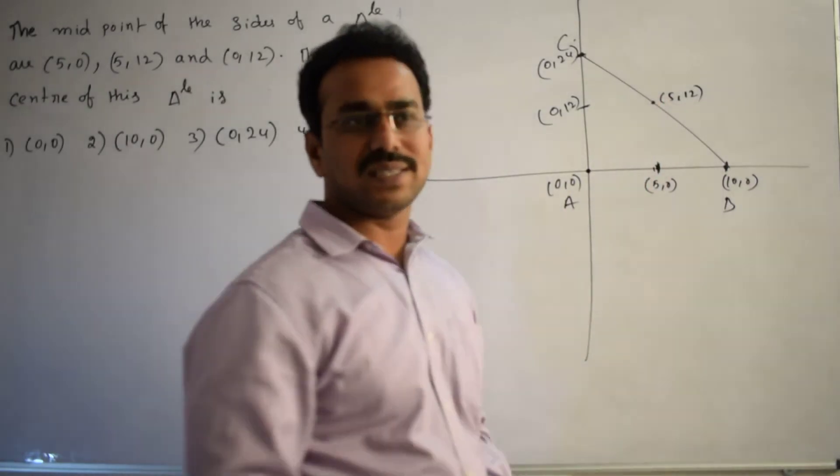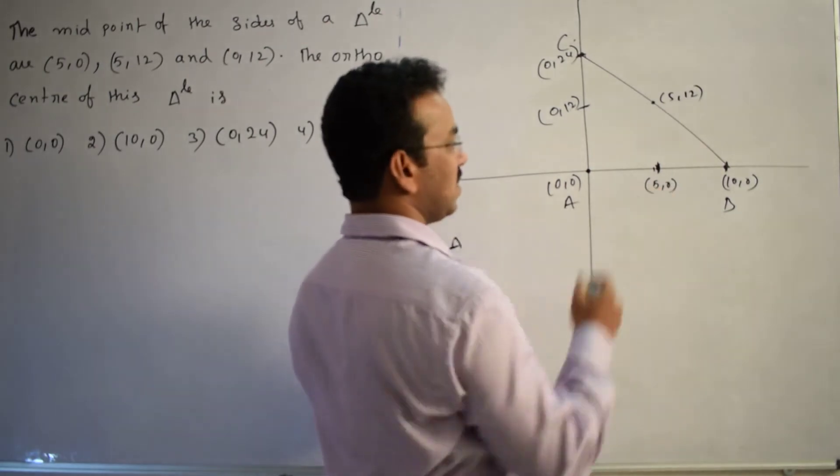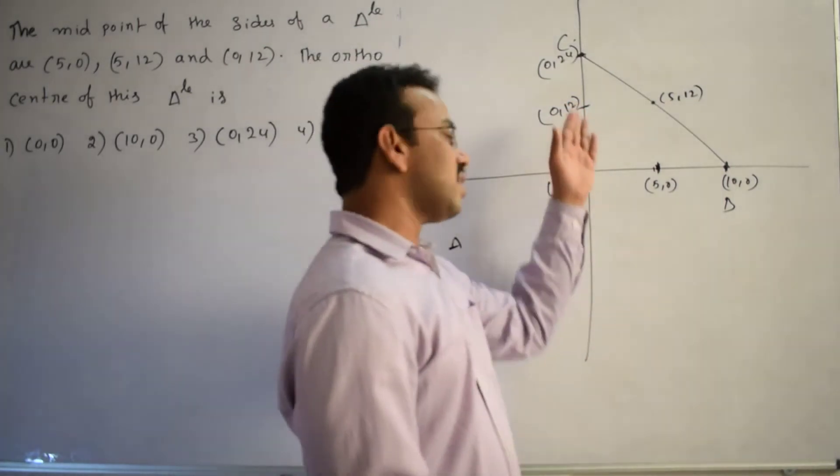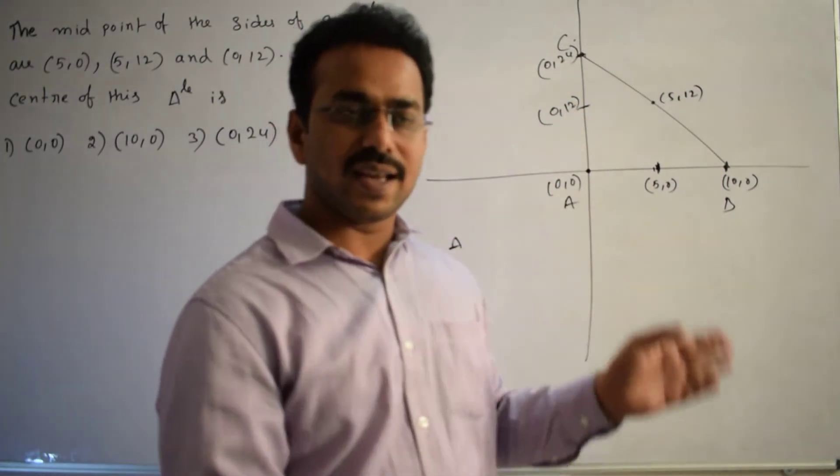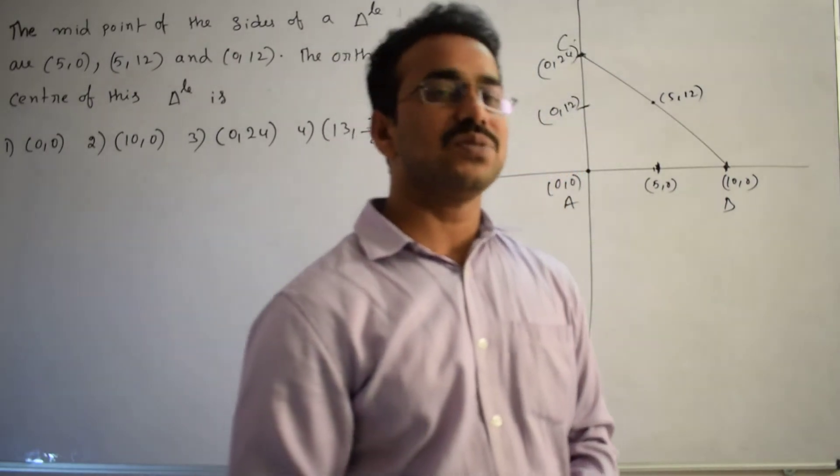So now what are the vertices of a triangle? A of (0,0) and B of (10,0) and C of (0,24). So by drawing this figure, clearly I calculated the vertices of a triangle. Now I have to focus on the altitudes.